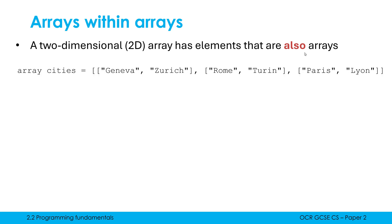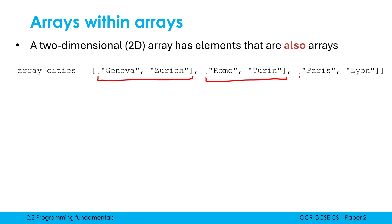So how does this look? I'm declaring an array with the array keyword. My identifier here is cities - it's the name of my array and it looks like an array. I've got square brackets, commas and strings, but the key difference is I've now got elements which are also arrays. Geneva and Zurich consist of one array with square brackets. Rome and Turin consist of another array, and Paris and Lyon is also an array.